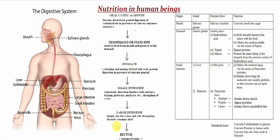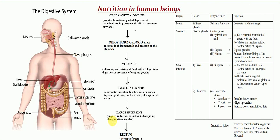Some part of the food we eat is not digested by our body. This undigested food cannot be absorbed through the walls of the small intestine, so it enters the large intestine. In the large intestine, excess water is absorbed from the undigested food. The remaining solid undigested food is stored in the last part of the large intestine called the rectum. After some time, this food is removed out of the body through the anus.